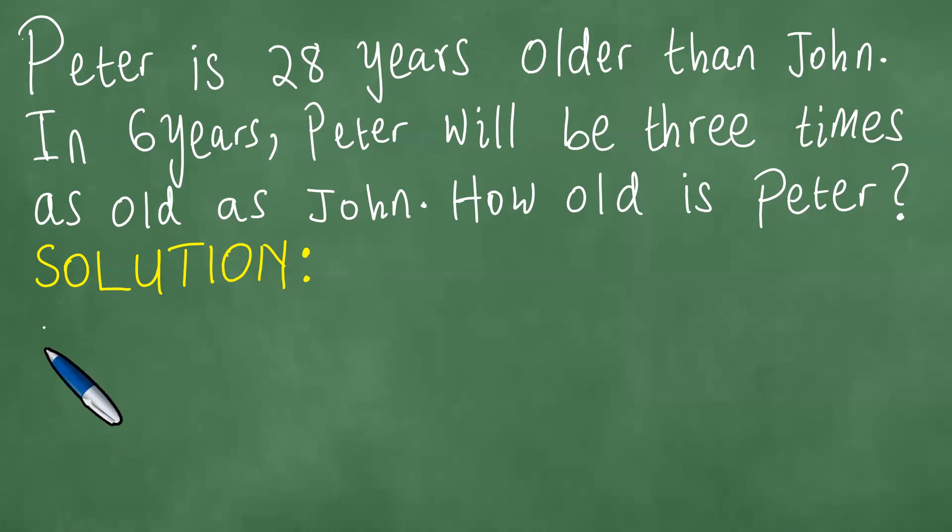We note that Peter is 28 years older than John. In six years, Peter will be three times as old as John. How old is Peter?